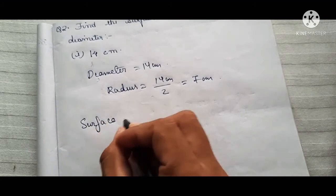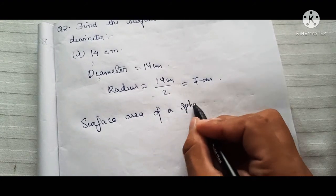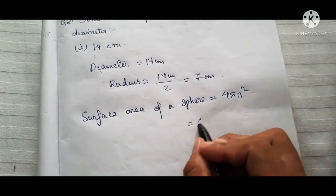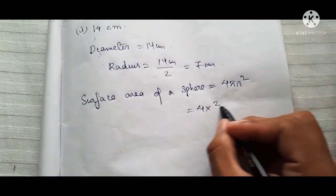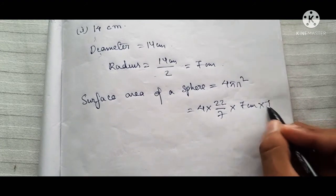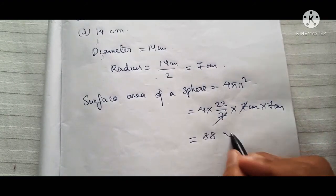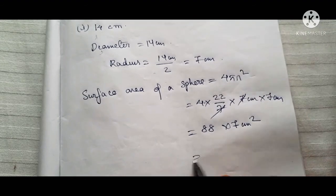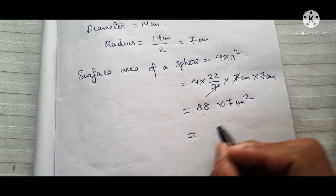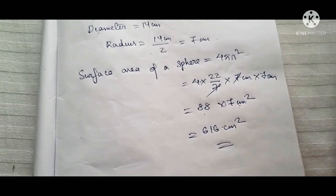Surface area of a sphere — the formula is 4πR². So 4π is 22/7, and the radius is 7 centimeters. So 4 × (22/7) × 7 × 7: the 7 cancels, giving 4 into 22 = 88, into 7 centimeters squared. So 88 into 7 is 616 centimeters squared. That is the answer to this question.